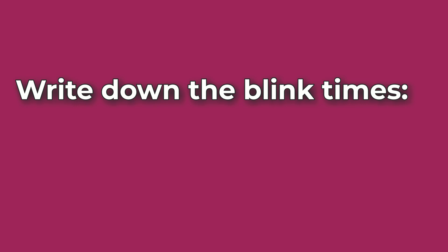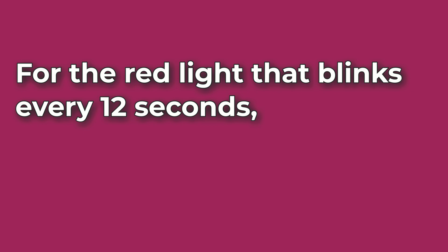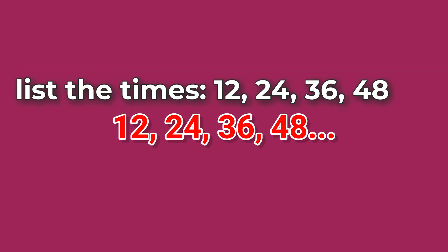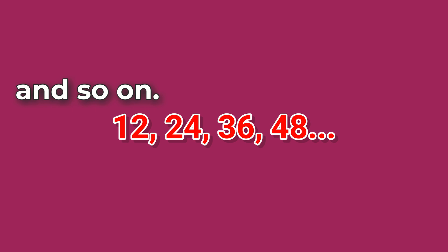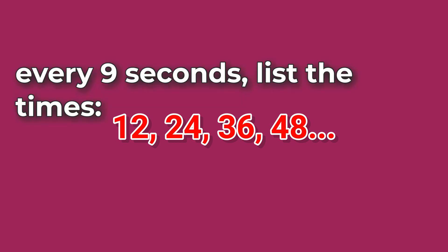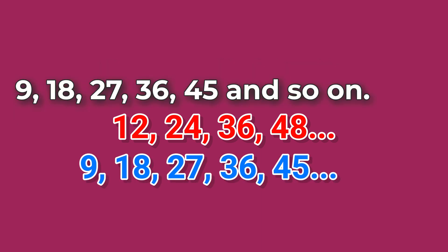Write down the blink times. For the red light that blinks every 12 seconds, list the times: 12, 24, 36, 48, and so on. For the blue light that blinks every 9 seconds, list the times: 9, 18, 27, 36, 45, and so on.